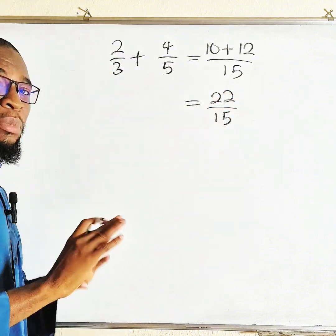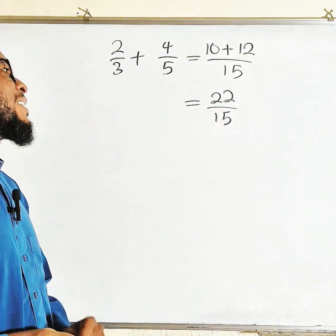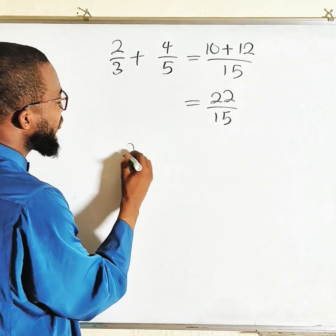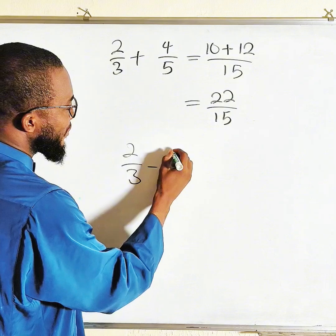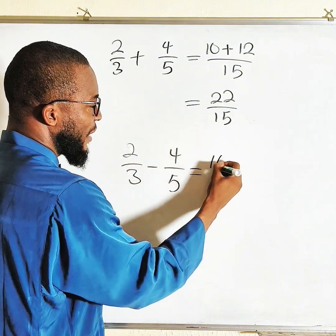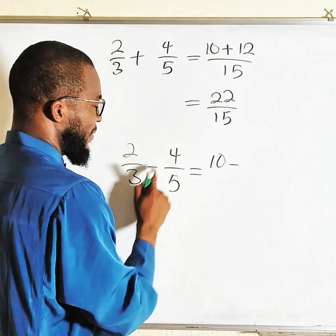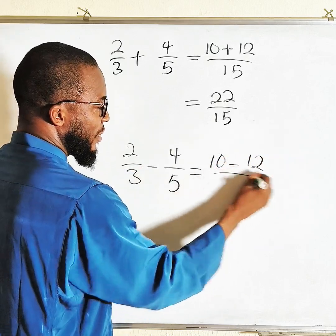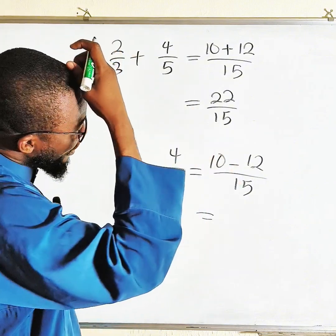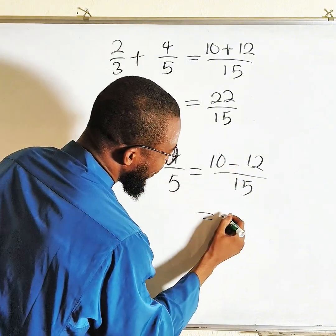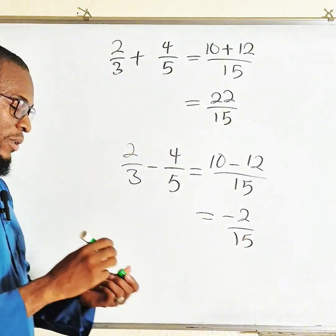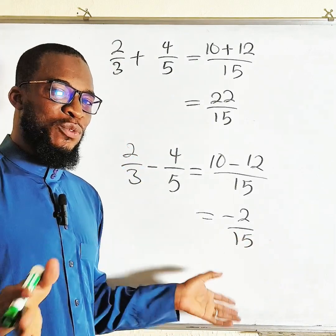This is the bow-tie method of addition, but if we have subtraction, it will be 2/3 minus 4/5. You can apply the same principle. This time this is 10, minus this time 12, divided by the base which is 15. And 10 minus 12 this time around is also negative: negative 2 over 15. So this is how to add or subtract fractions in different situations.